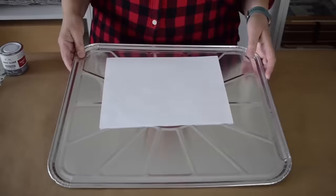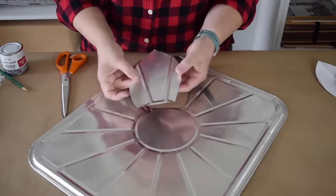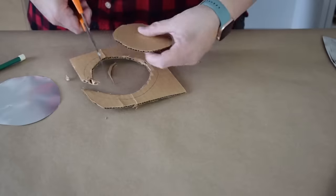I saw these foil trays at the dollar store. I'm going to start by creating a pattern of paper. I want to make eight of these petals and then I'm going to make one a little smaller. This is going to be the middle of my flower.